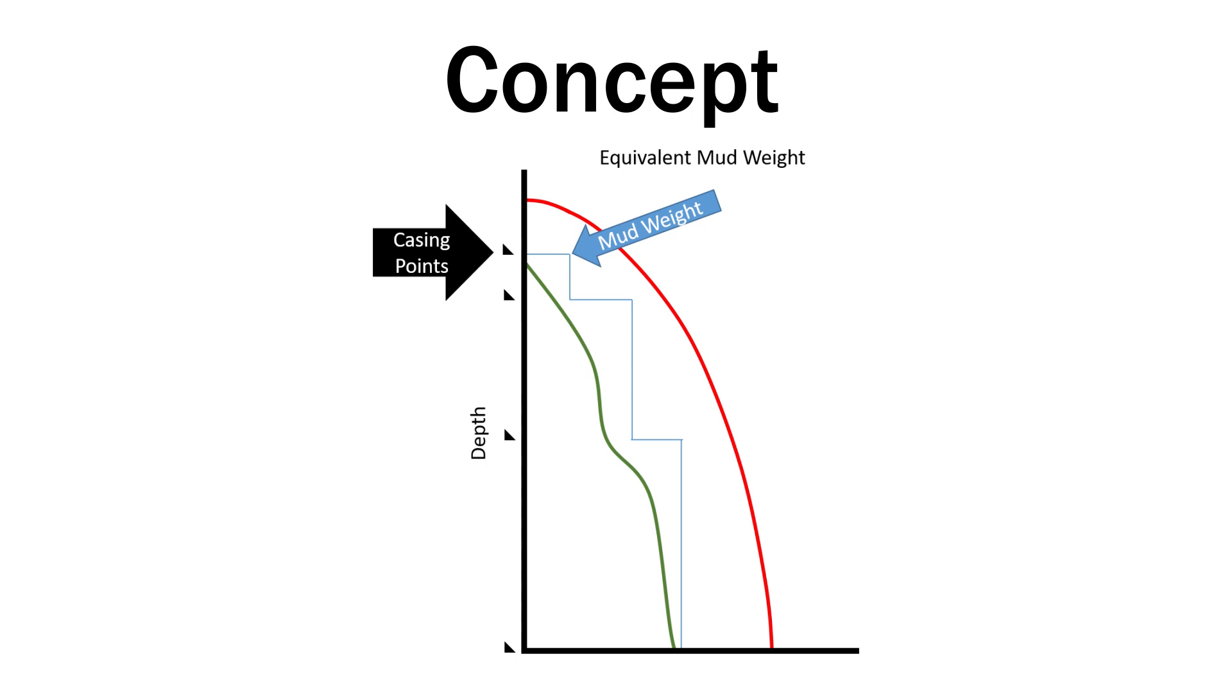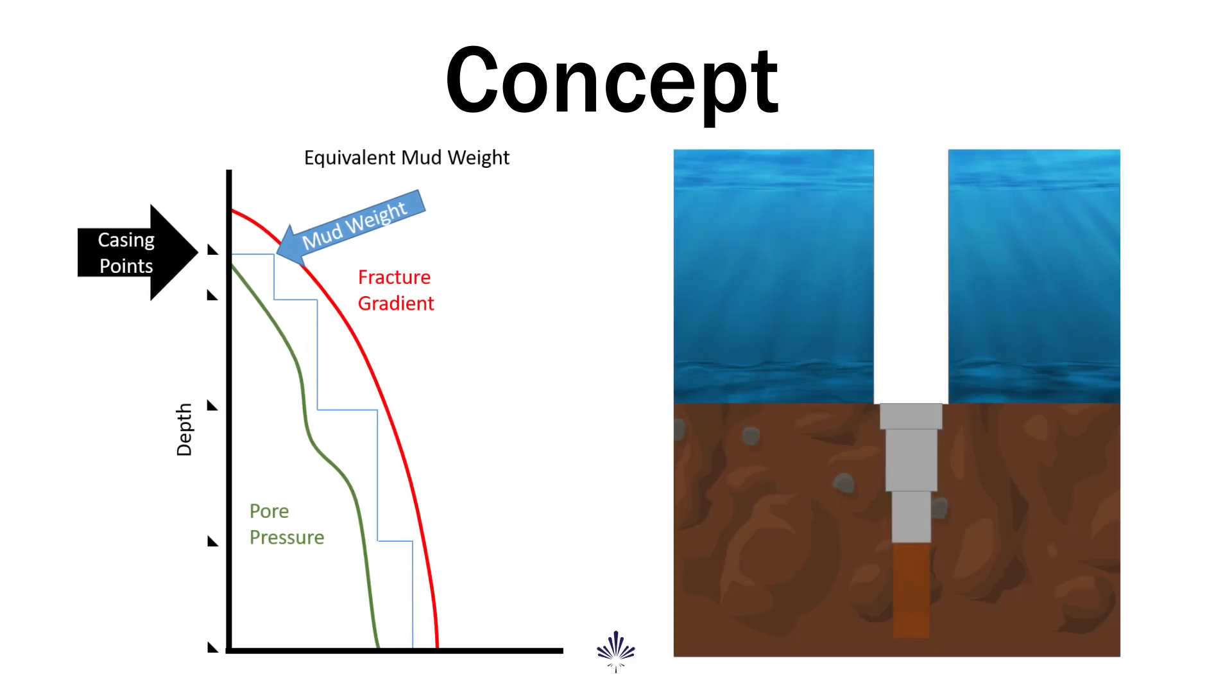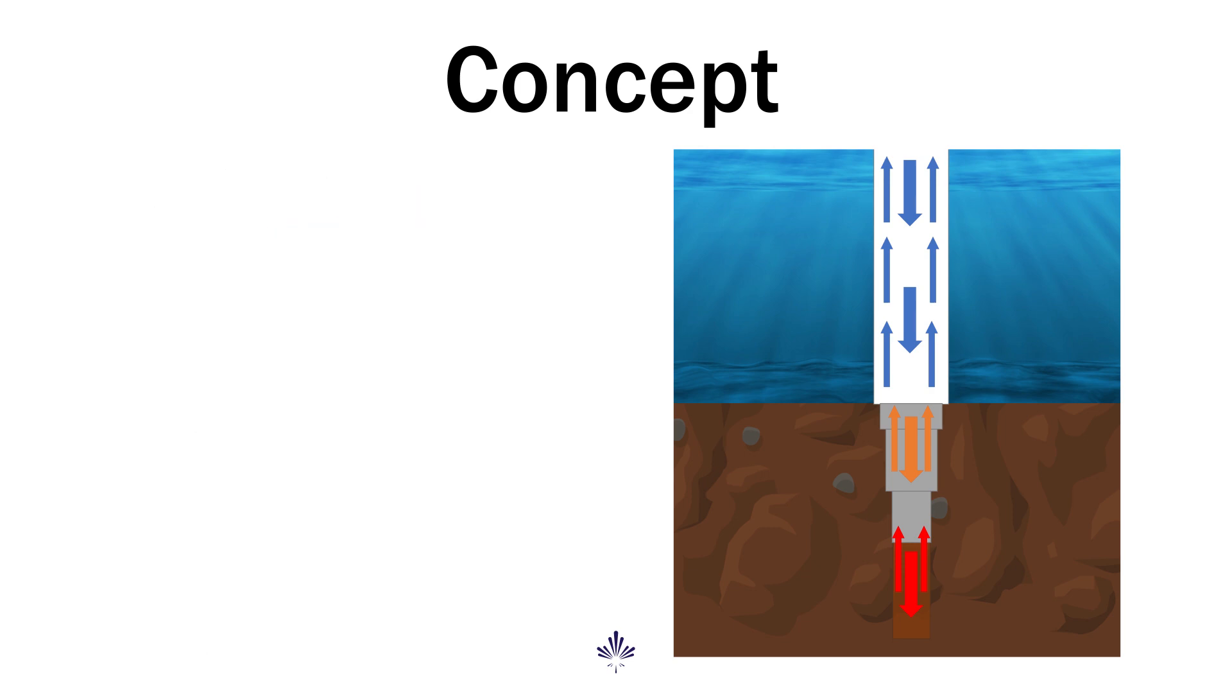The challenges of deepwater drilling are complicated by narrow ECD windows due to lower overburden density. This increases the risk of losses and may require extra casing strings. As you drill at deeper water depths, drilling fluid is exposed to cold temperatures for long periods as it passes through the riser. With this, the fluid thickens, increasing circulating pressures. In the narrow fracture gradients typically found in deepwater, the higher equivalent circulating density and surge pressures mean a greater risk for losses.